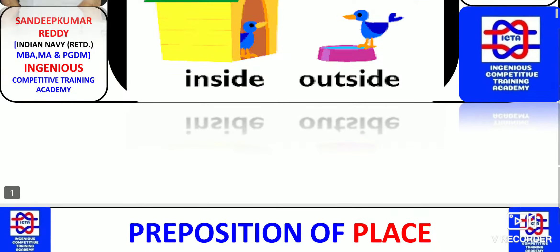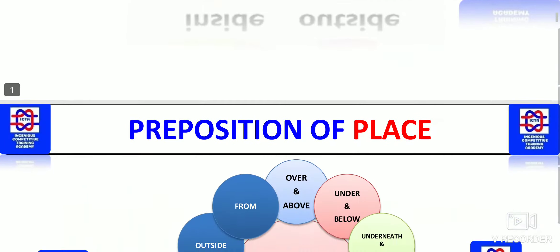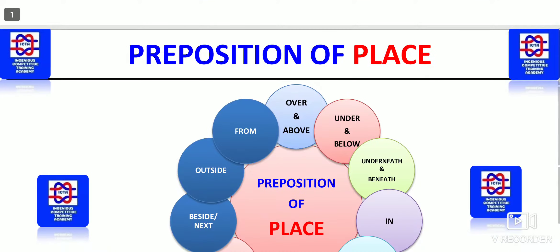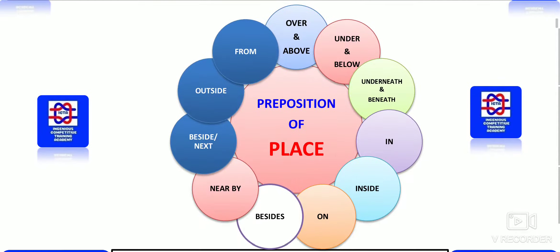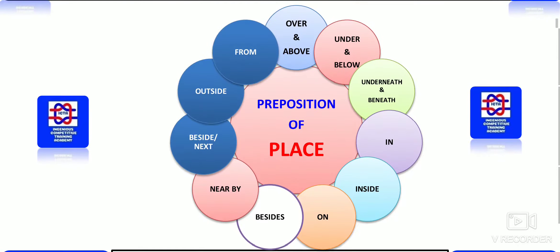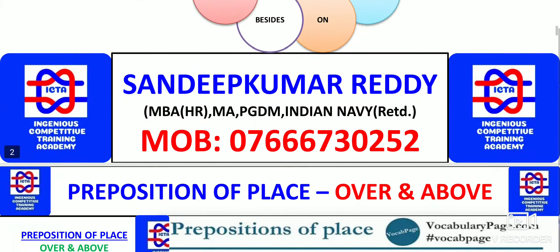We have near, about, up to — parts 4 to 5 we will be discussing about preposition of place. As you can see, preposition of place is further subdivided into: over and above, under and below, underneath and beneath, in, inside, on, beside, nearby, beside or next, outside, and from — all of which can be used in different places as prepositions of place.